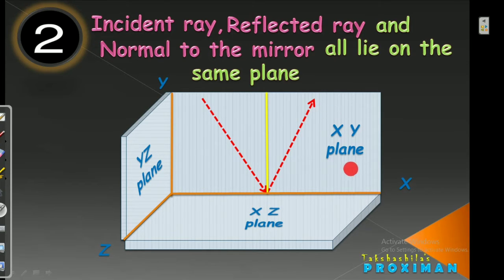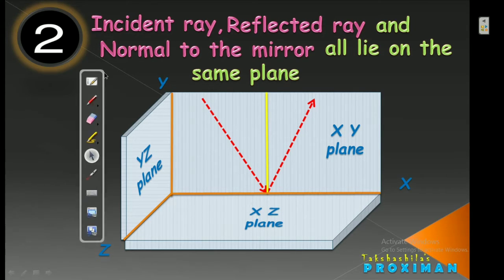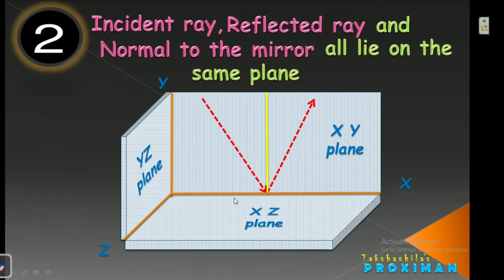As you can clearly see, they are on the XY plane and they are meeting at the XY plane. They all lie on the same XY plane. It is not that the Incident Ray is on one plane, the Normal on another, and the Reflected Ray on yet another plane. They all lie on the same plane. That is what is stated by the Second Law. This is how we understand the concept using our Visual Diagram Technique.